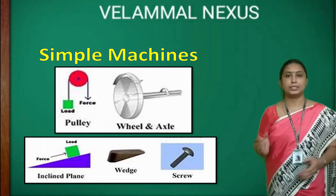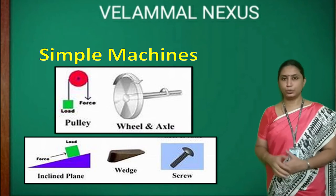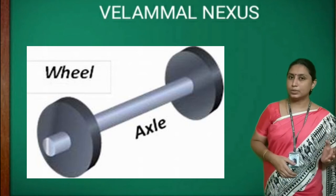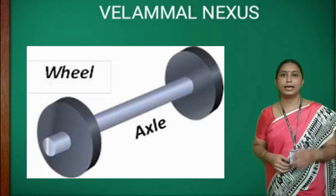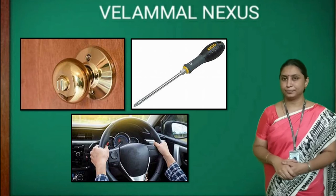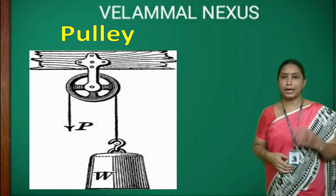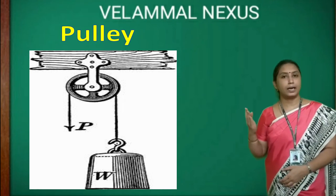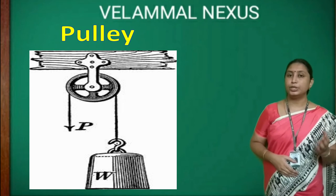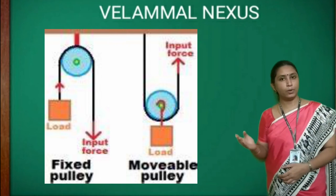Let's recall the key points. Today we learned about wheel and axle, pulley, inclined plane, wedge, and screw. In wheel and axle, a wheel is connected to a rod called the axle; when the wheel rotates, the axle also rotates — examples: screwdriver, doorknob, and steering wheel. A pulley consists of a wheel with a grooved rim and a rope, chain, or belt running around the groove; the wheel rotates around an axle. A pulley is used to lift heavy objects and can be fixed or movable.